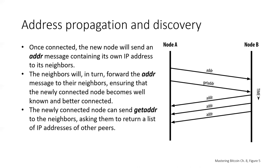After bootstrapping, a node will remember its most successful peer connections so that if it is rebooted, it can quickly reestablish connections with its former peer network. If none of the former peers respond to its connection request, it can use the seed nodes to bootstrap again. If there is no traffic on a connection, nodes will periodically send a message to maintain the connection. If a node has not communicated on a connection for more than 90 minutes, it will assume it's disconnected and a new peer will be sought. The network dynamically adjusts to transient nodes and network problems and can organically grow and shrink as needed without central control.